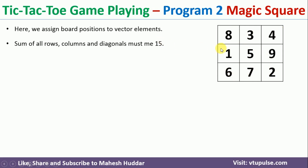For example, 8 plus 3 plus 4 is 15, 8 plus 1 plus 6 is 15, and 6 plus 5 plus 4 is also 15. If you take any row, column, or diagonal, it equals 15. That is why it is called the magic square.